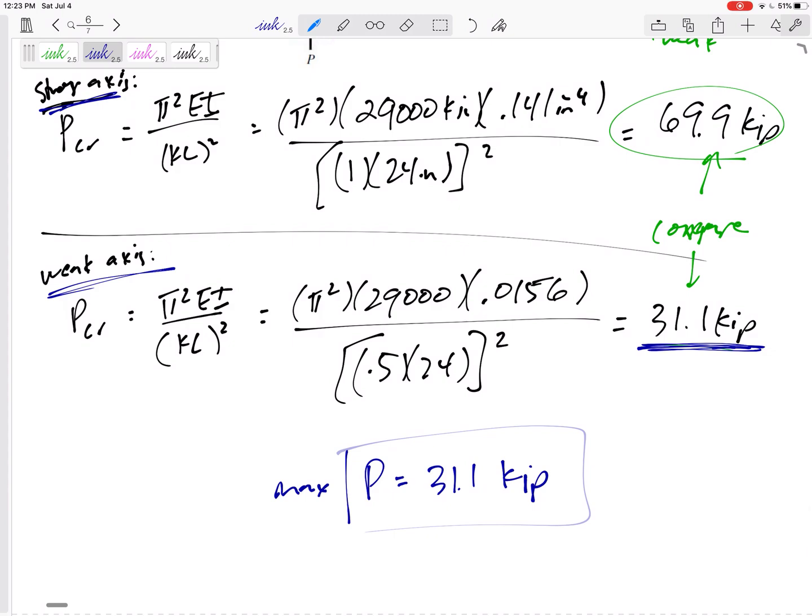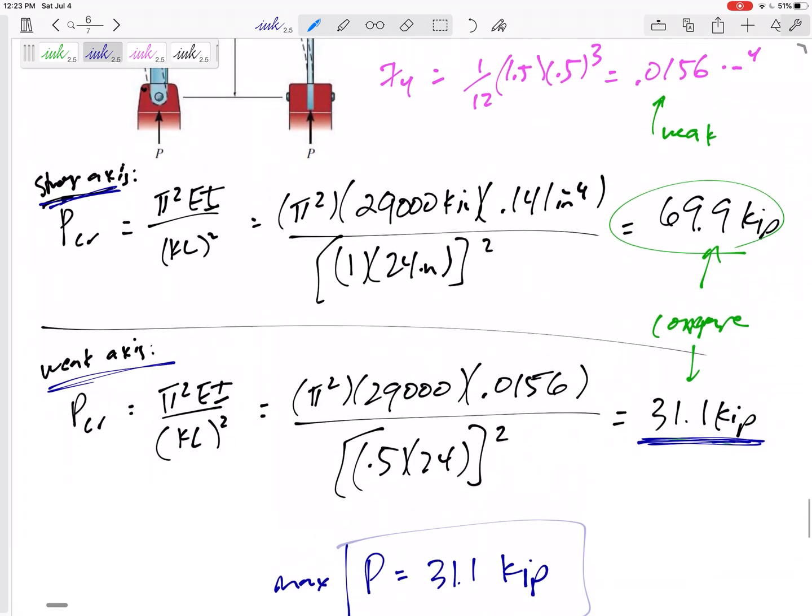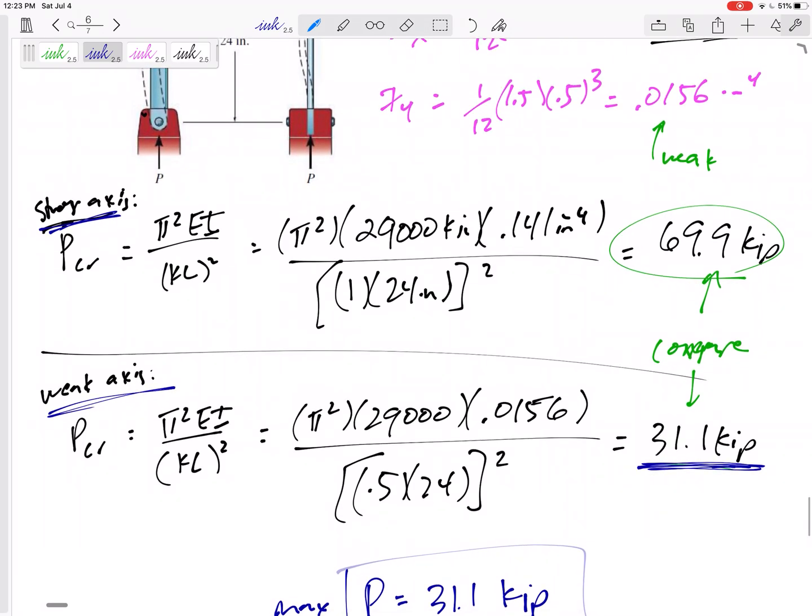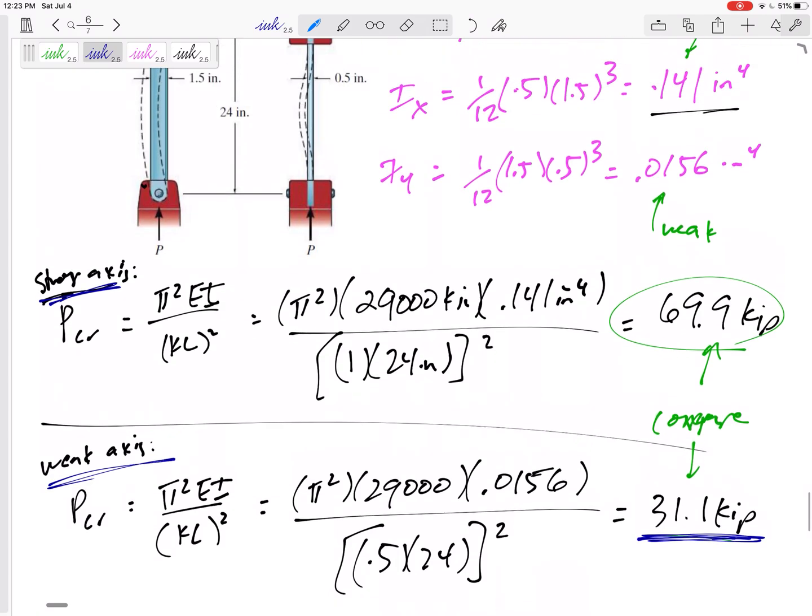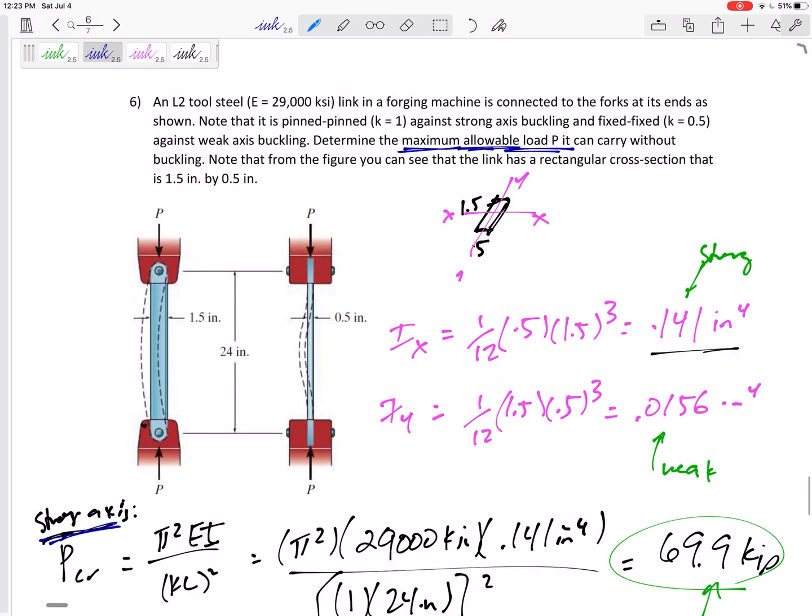Okay, so for column buckling, we've got our equation: pi squared EI over KL squared. I'm going to give you the K value, but you know if it's pin and pin, K is 1. Fix and fix, K is 0.5. Pin and fix, fixed and free, pinned and free - I'll give you those K values.